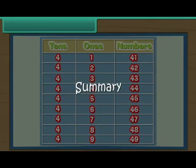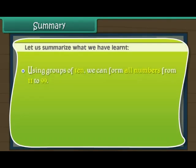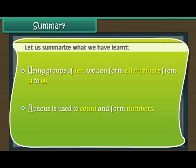Summary. Let us summarise what we have learnt. Using groups of ten, we can form all numbers from 11 to 99. An abacus is used to count and form numbers.